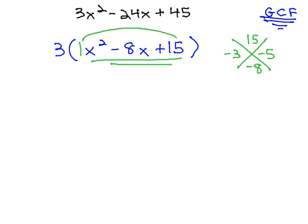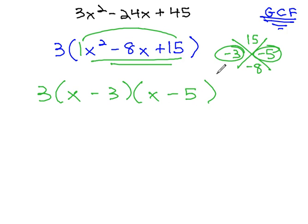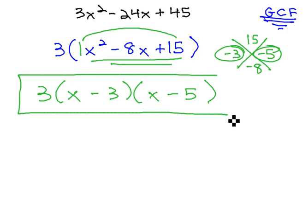We have our pair of numbers. We have 3 in front, the GCF will never go away. Don't let it disappear. And then we have x - 3, and x - 5. And now our problem is completely factored.